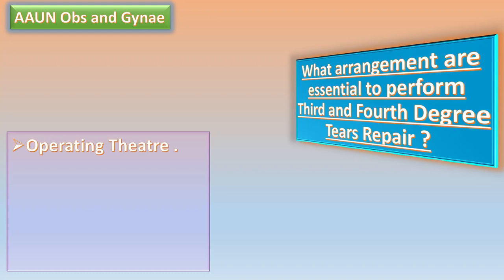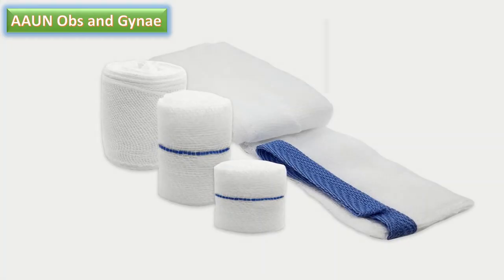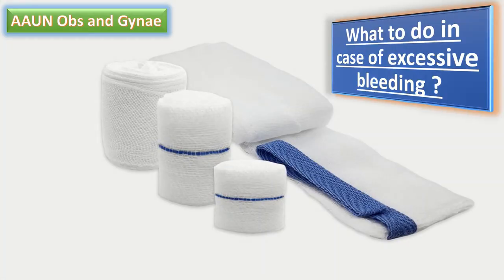What arrangements are essential? First, repair should take place in an operating theater and should be done under regional or general anesthesia, with good lighting and appropriate instruments. If there is excessive bleeding, a vaginal pack should be inserted and the woman should be taken to theater as soon as possible.